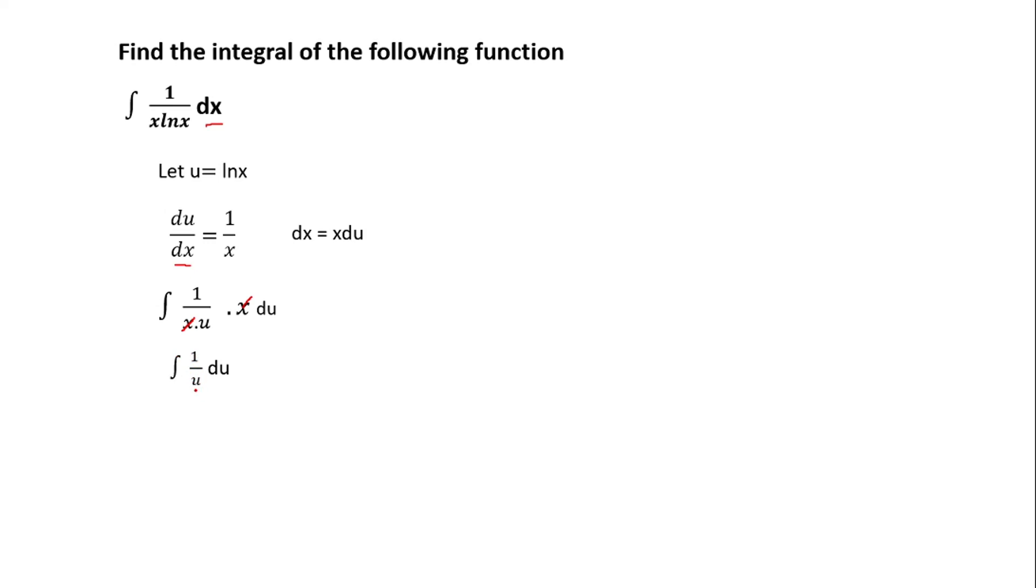So you get ln u plus c. And ln u plus c, you know that we previously let u be equal to ln x. Therefore, you are going to replace the u with ln x. So what you get is ln, the absolute value of ln x plus c. So you get ln ln x plus c.